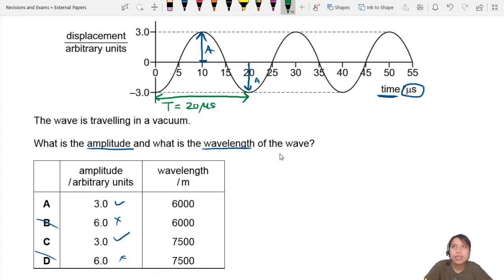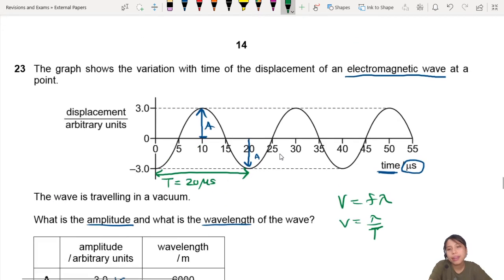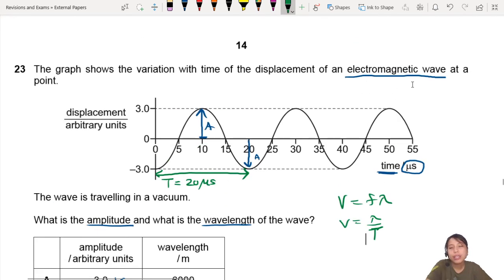Can we think of how to find wavelength from period? Oh, I know! We can use V equals F lambda, or V equals lambda over T. But what is the velocity of the wave? Hold up, it's an electromagnetic wave, so it travels at the speed of light, which is 3 times 10 to the 8 meters per second.